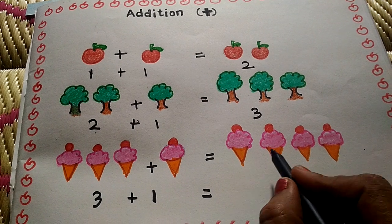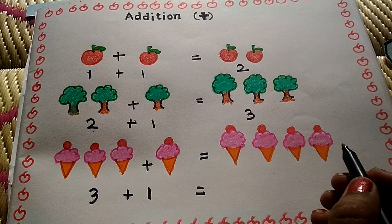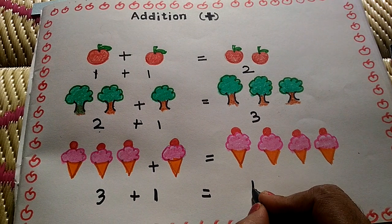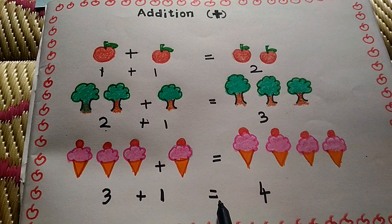How many ice creams here? Total number of ice creams. How many here? One, two, three, four. Four ice creams. Answer is four.